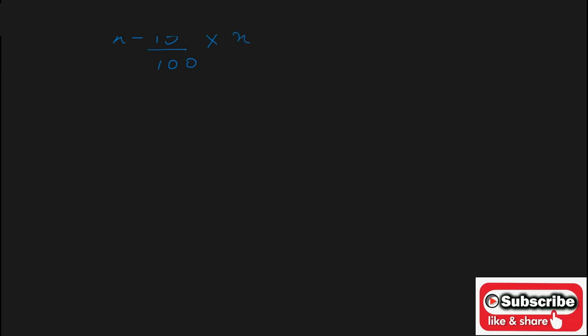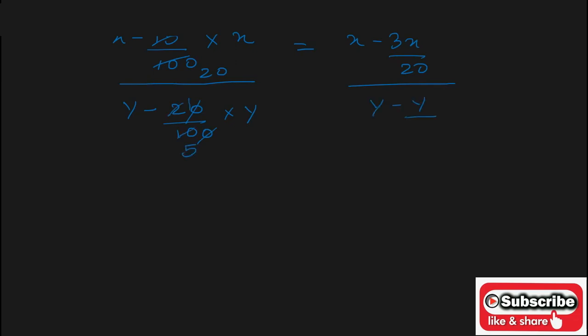Solving this, we get x minus 15 upon 100 of x, which gives x minus 3x upon 20, divided by y minus 20 upon 100 of y, which gives y minus y upon 5.